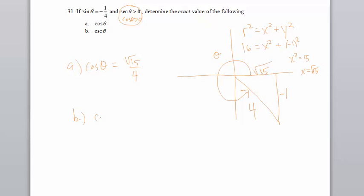Check the cosecant of theta. We actually didn't have to do any work for it. I don't even need my picture because I know the cosecant is reciprocal of the sine. So I just reciprocate negative one-fourth and I get negative four.